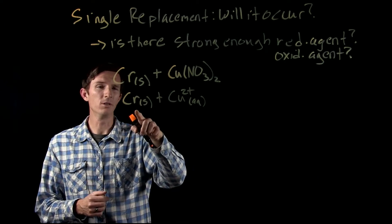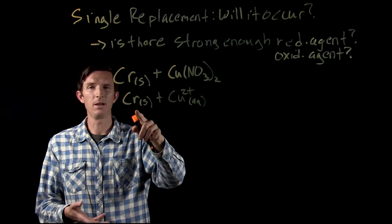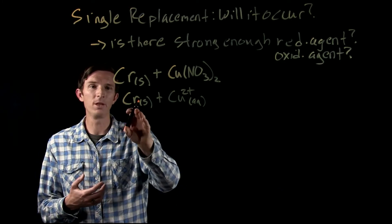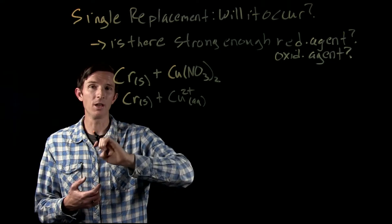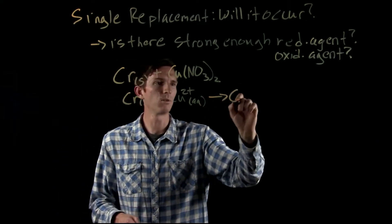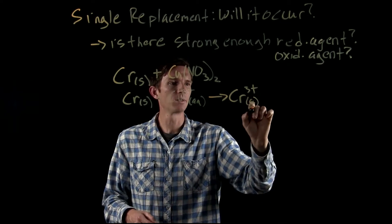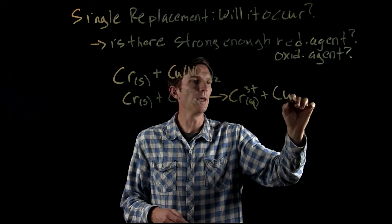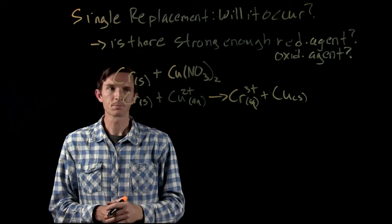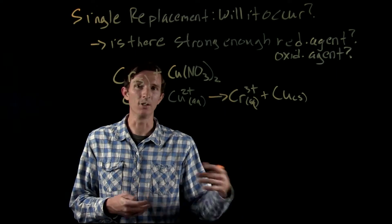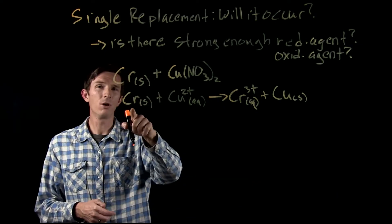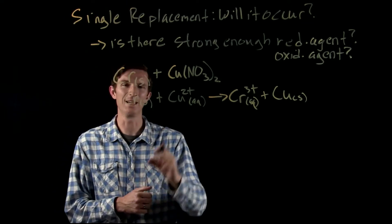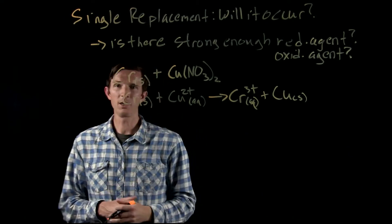As we look at this, we think: what is the possible reaction that could occur? We wouldn't think about chromium being reduced because we'd add electrons to it and it would become a negatively charged ion. We know metals don't want to be negatively charged ions, so all we can think about is chromium losing electrons — becoming chromium 3+. Then copper would gain electrons and we would get solid copper. So we need to determine: is chromium a strong enough reducing agent to reduce copper, or is copper a strong enough oxidizing agent to oxidize chromium?